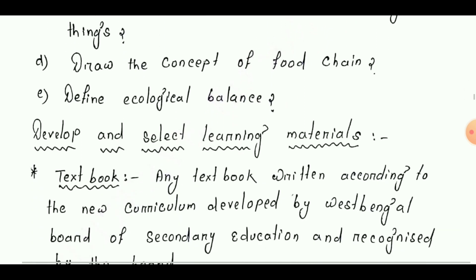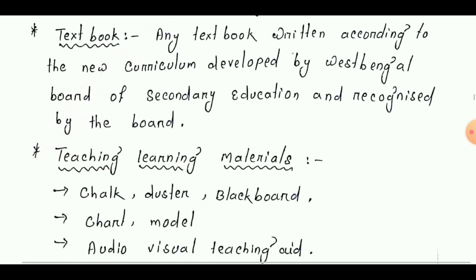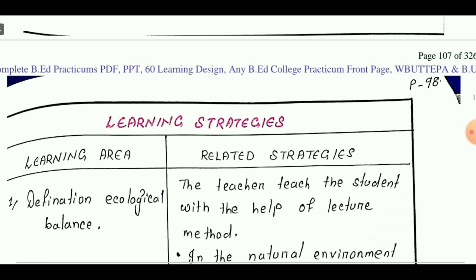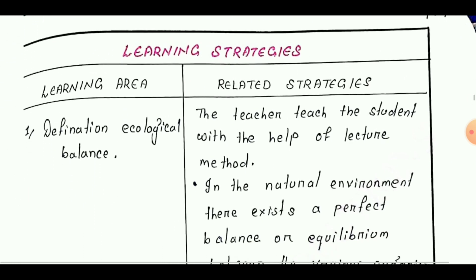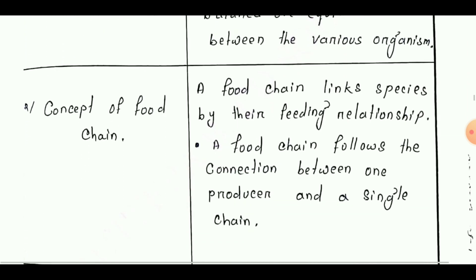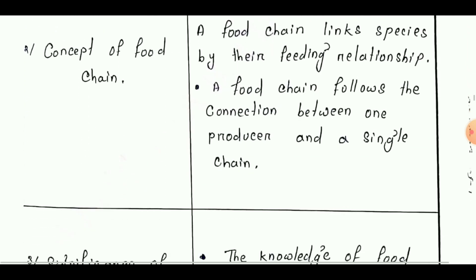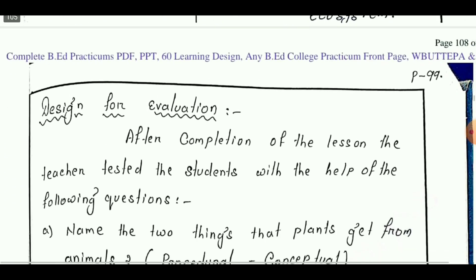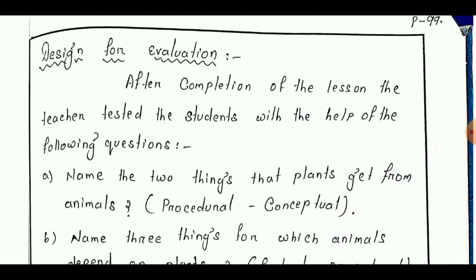Next is develop and select learning materials. The learning strategy has the learning area on the left side and related strategies on the right side, covering the concept of food chain and significance of food chain. Next point is design for evaluation.